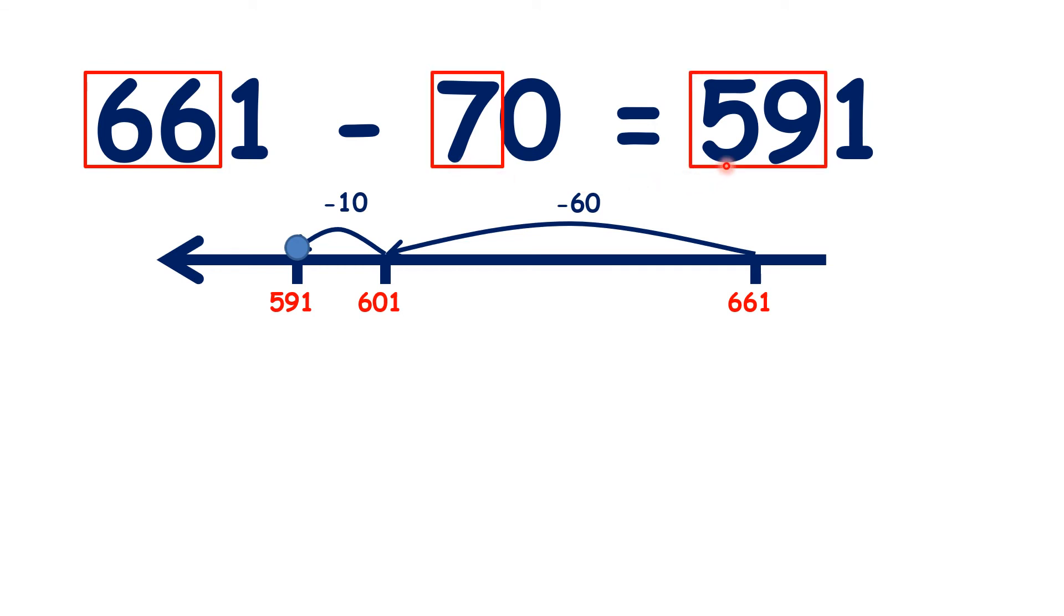And then in our answer, we got 5 hundreds and 9 tens, which we can think of as being 59 tens. So if you know that 66 minus 7 is 59, you know that 661 minus 70 is 591, because we're only subtracting tens, the 1 in our units stays the same.